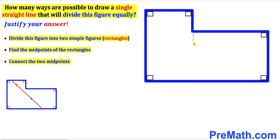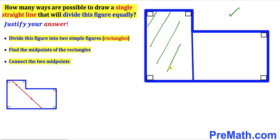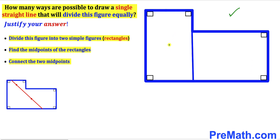Here is our next option. We draw a straight line parallel to this other side. We can see that this straight line divides the shape into two simple rectangles — this is the first rectangle and this is the second simple rectangle.